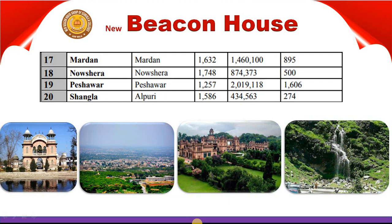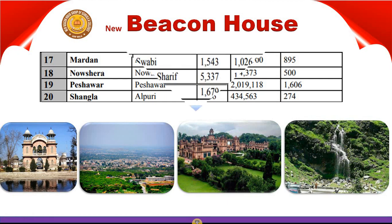The nineteenth district is Peshawar. Its headquarter is also in Peshawar. It has an area of 1,257 km², a population of 2,019,118, and a density of 1,606 people per km². The twentieth district is Shangla. Its headquarter is in Alpuri. Its area is 1,586 km² and its density is 274 people per km².